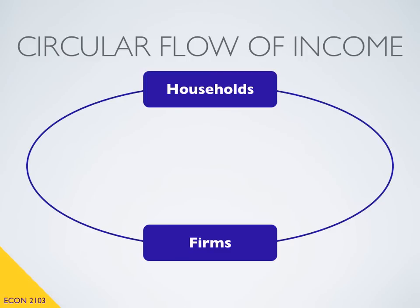Along this Circular Flow of Income Diagram, there are two separate types of economic activity. The first type is what we will call the product market. In the product market, it's the firms that provide goods and services to the households. Whenever you go to the grocery store to buy food, you're participating in the product market. Whenever you go buy a television at Best Buy, you're participating in the product market.